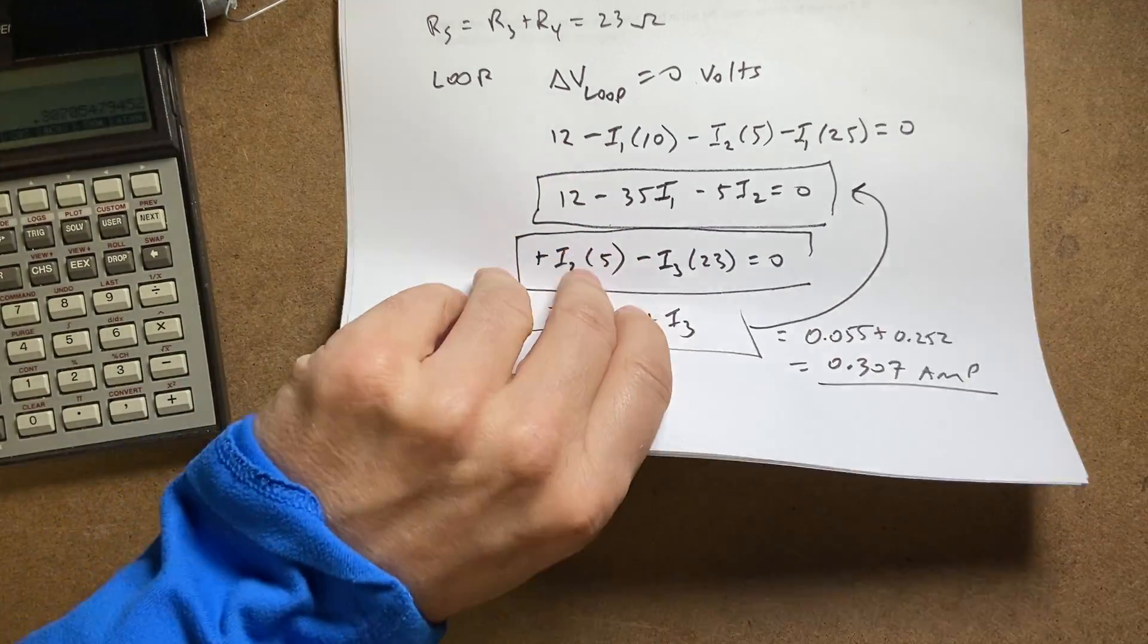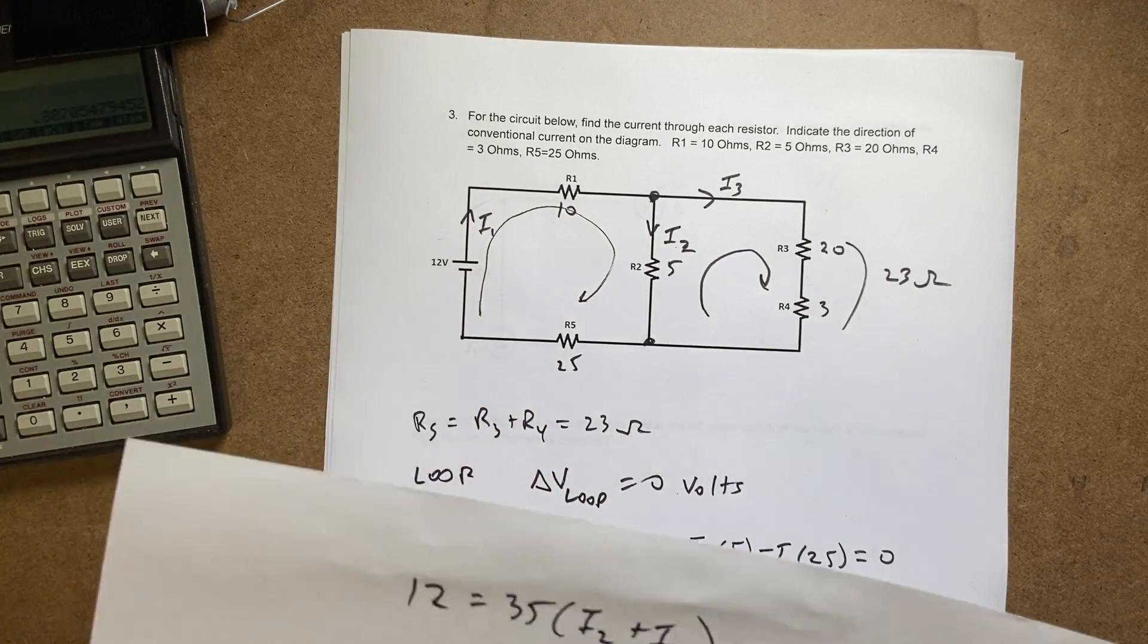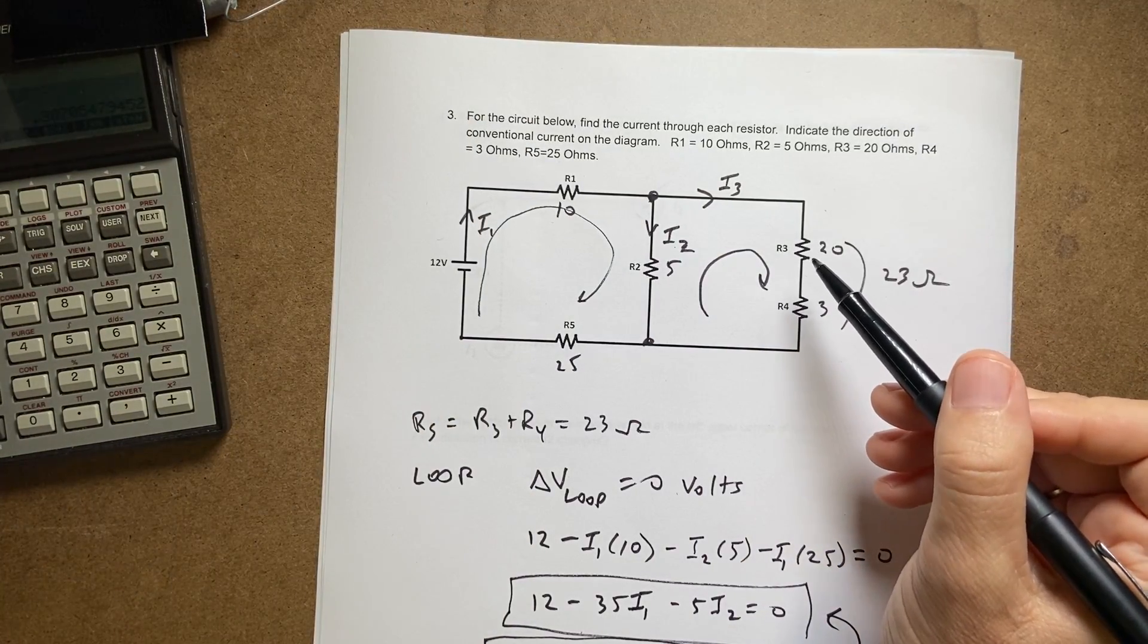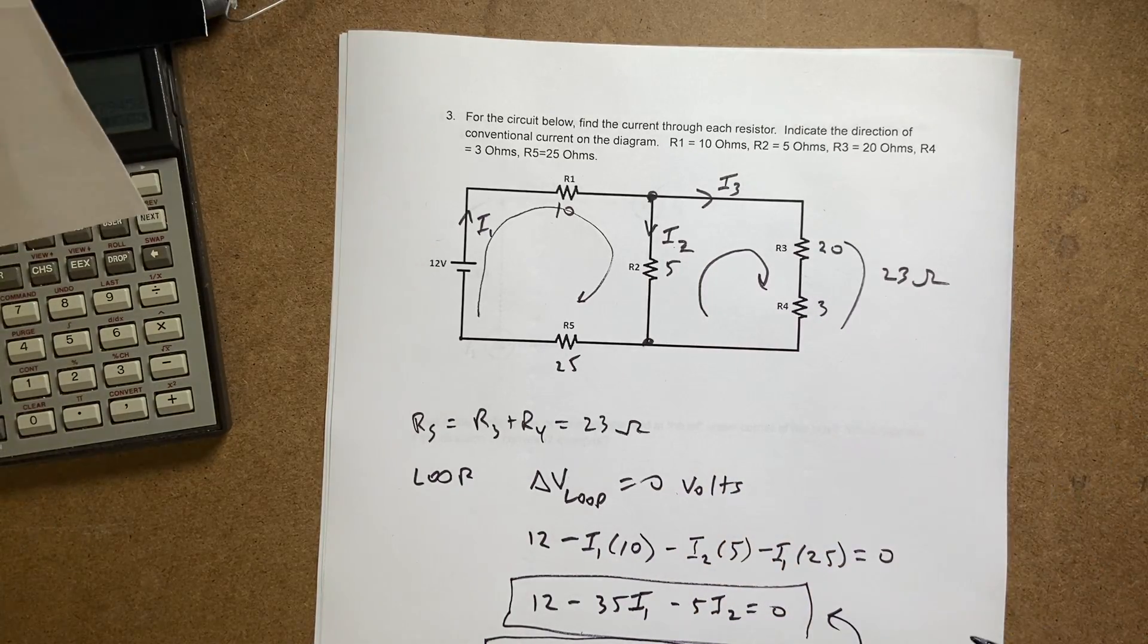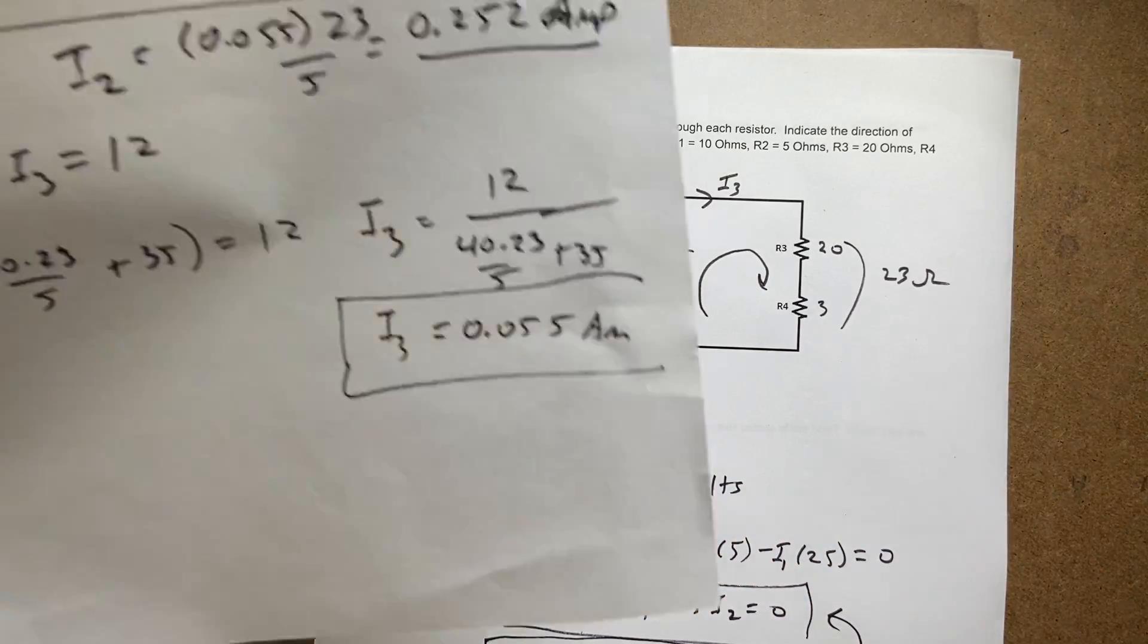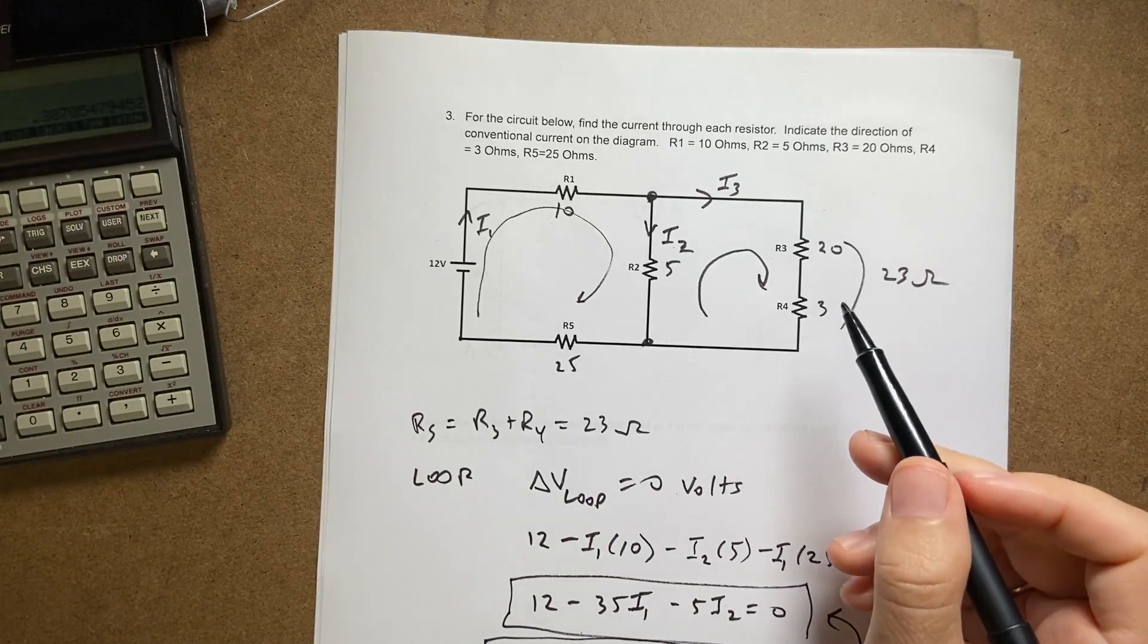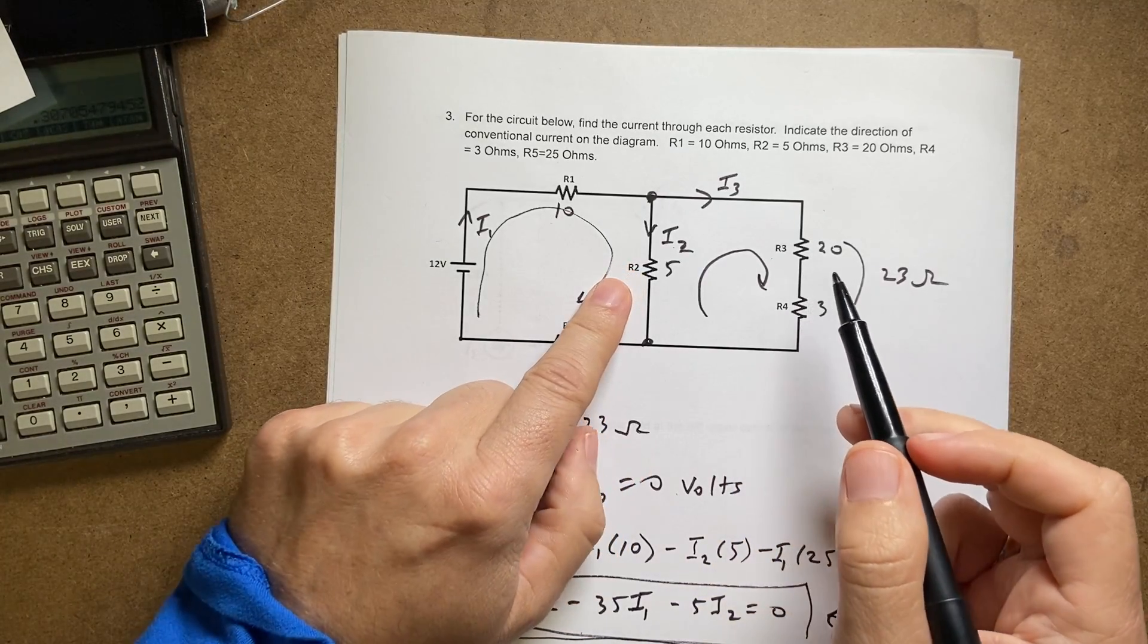Now they're all positive values, they're all positive, which means that when I picked my directions up here they were correct. Okay, if I solved for one of these and I got a negative number for my current, that means it's in the opposite direction. Let me check to here. My lowest current is i3, which is right here.